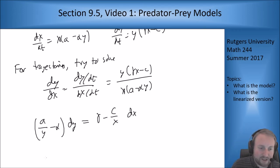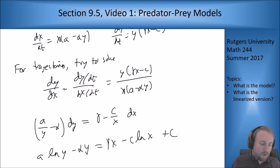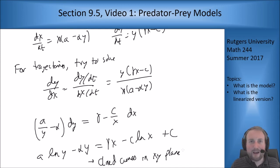And then you can solve this so I get a log y minus alpha y equals gamma x minus c log x plus a constant. And now what can be proven and we're not going to prove it here is that these actually do make closed curves in the xy plane which means we actually do get some sort of periodic orbits coming out of these.